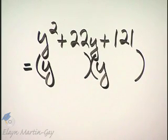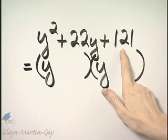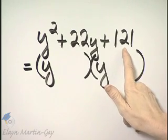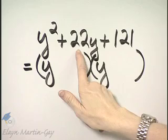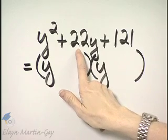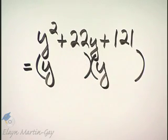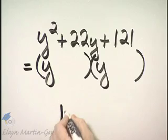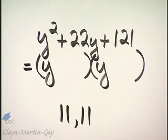and I'm looking for two numbers whose product is 121 and whose sum is 22. And I'm looking for positive factors. Notice, these two numbers, their product is 121, their sum is 22,